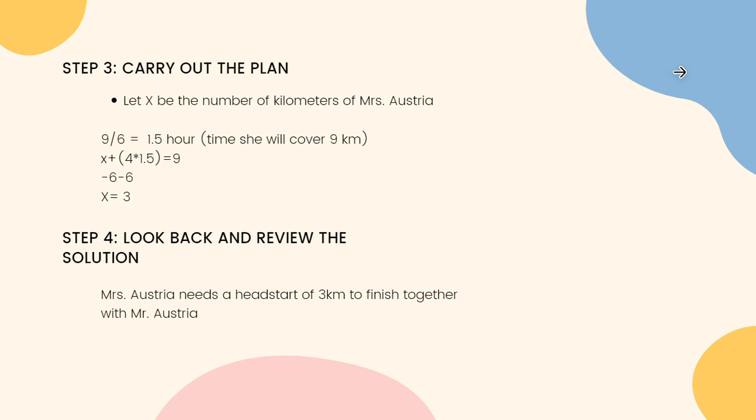Now that we found the time, let us substitute it into our equation: x plus four times 1.5 equals nine. Simplifying, x plus six equals nine. Let us now subtract six on both sides, and we are left with x equals three. They would need to give Mrs. Austria a three kilometer head start for them to finish the nine kilometer run at the same time. To check, substituting our answer: three plus four times 1.5 equals nine. This verifies our answer.